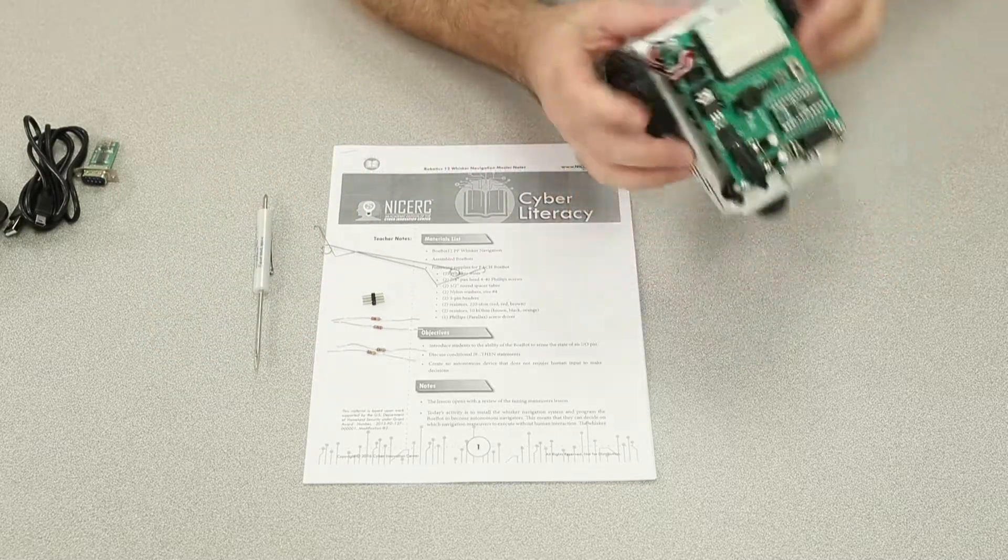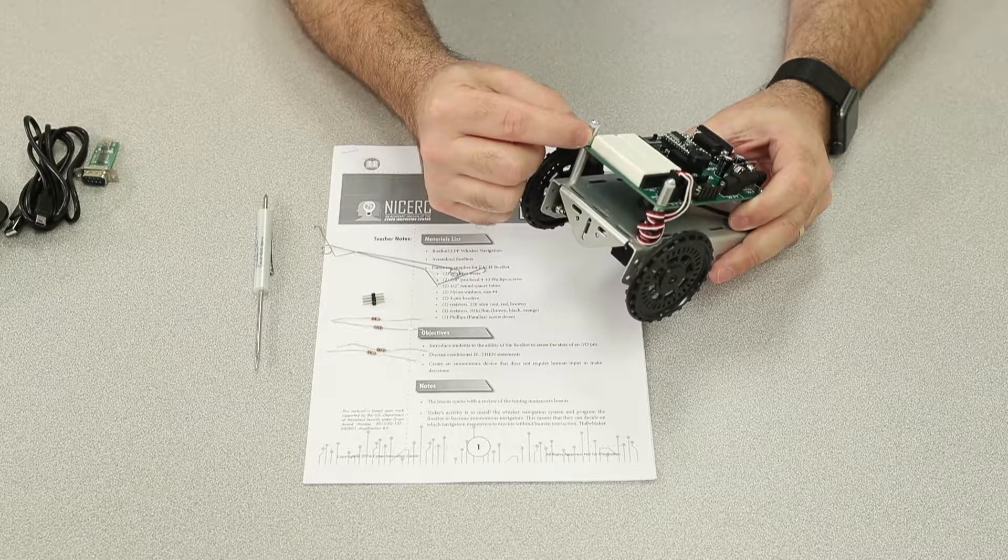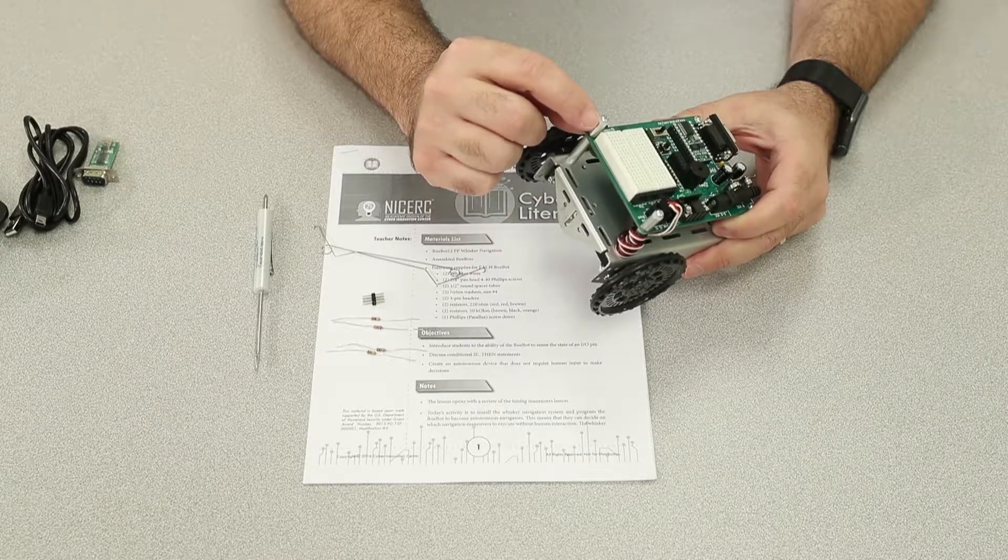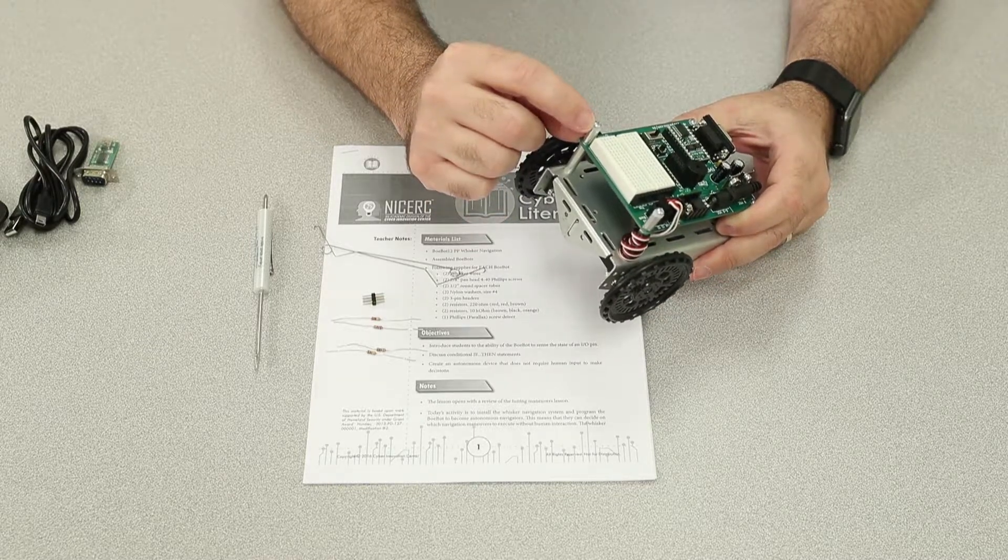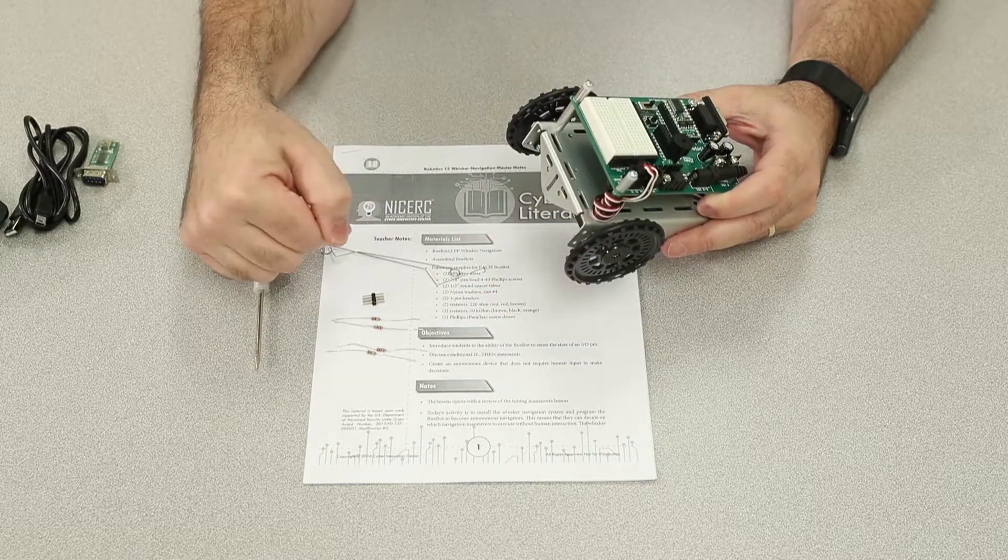In addition, the Bobot's going to have to be assembled so that these standoffs are on here, as well as these plastic washers with the Phillips head screws. So I've already got these in place, now we're going to install the whiskers.